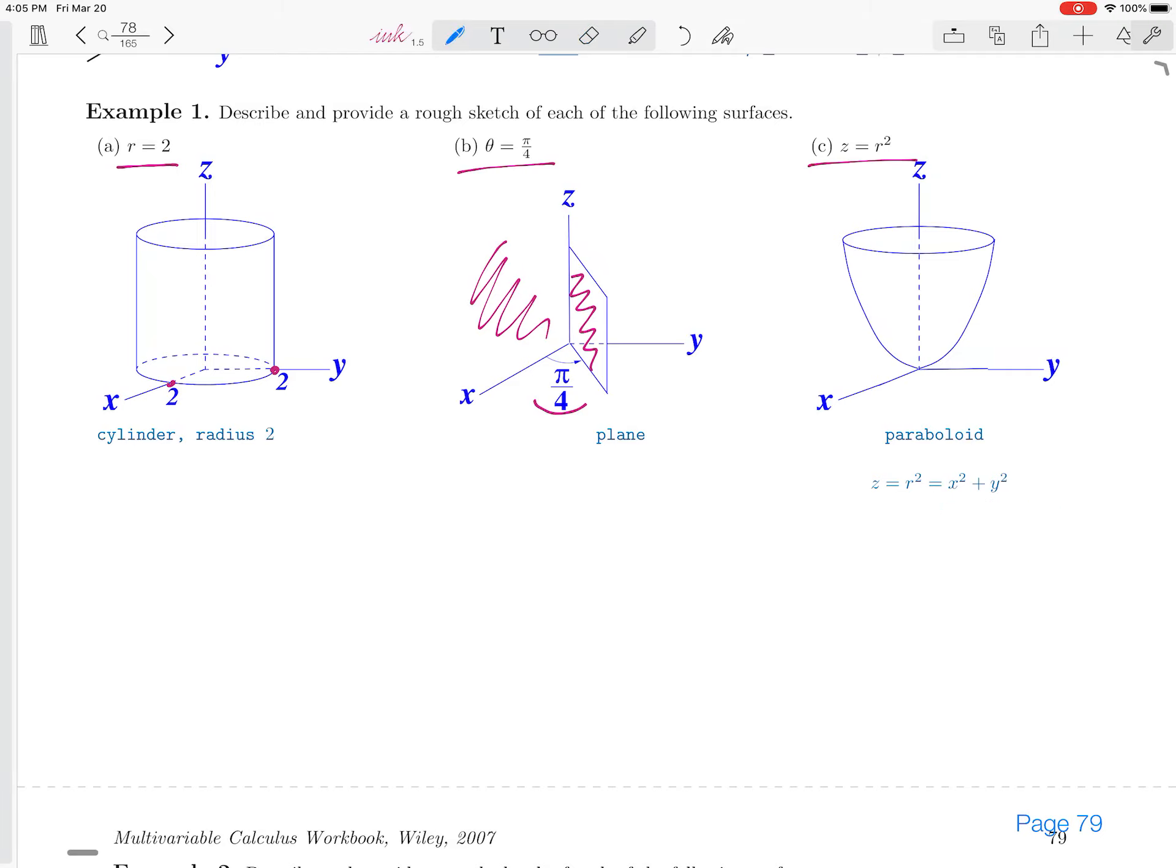So if we are looking at z equals r squared, we are really looking at z equals x squared plus y squared. We've seen this surface before - it's a paraboloid, and it looks like this.